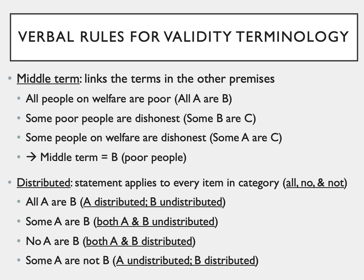Maybe you're thinking circle diagrams seem challenging — if so, you might prefer the verbal rules for validity. First, you need to learn a couple of important pieces of terminology. The first is the middle term — the term that links the premises. In our example: all A are B, some B are C, some A are C — the middle term B appears in both premises but not in the conclusion. It links premise one to premise two so that the conclusion can represent the relationship between A and C.